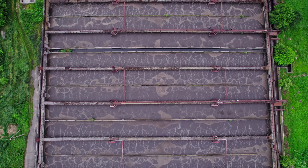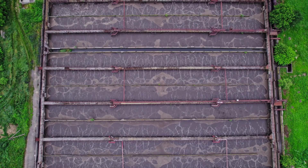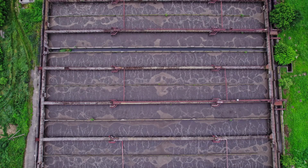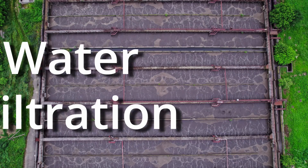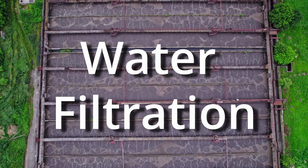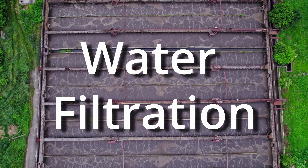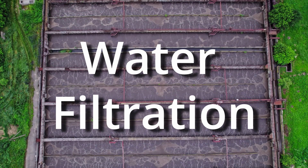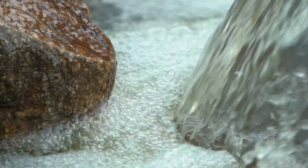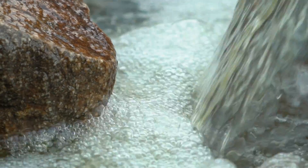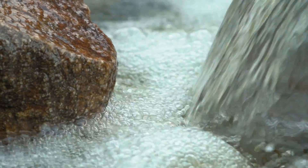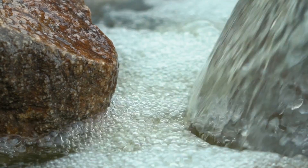After we've reduced the amount of nutrients we put into the environment, there are certain strategies we can use to further limit eutrophication, such as filtering nutrients out of stormwater and filtering excess nutrients out of bodies of water. We could also try adding oxygen into anoxic waters, but solutions should start with preventing nutrient waste in the first place.